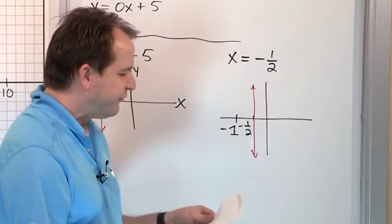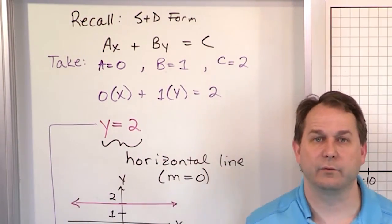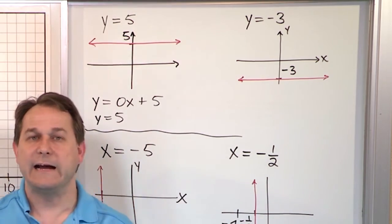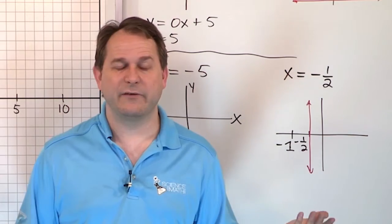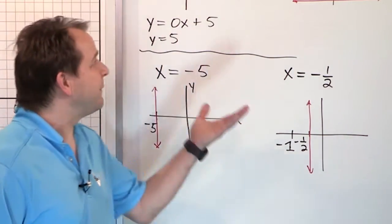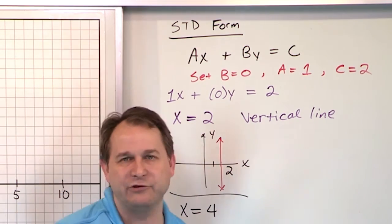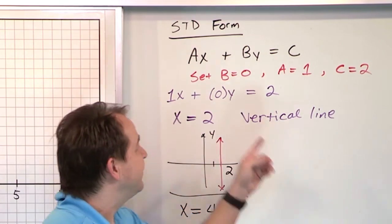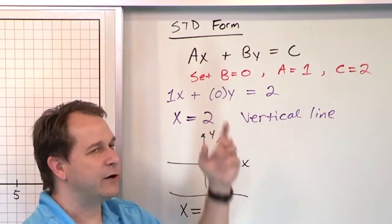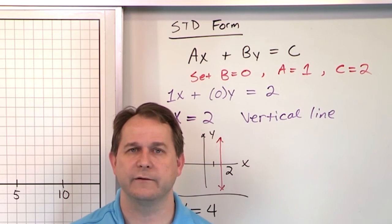I could have just started this lesson and said: horizontal lines have the special form y equals a number, vertical lines have the special form x equals a number — now memorize it. But I don't like doing that, because they're not special. They come from the same exact standard form that all lines come from. It's just that when you set one of the constants equal to zero, a special case drops out. They all come from the same place — in math, you shouldn't treat different-looking things as unrelated when they're actually connected.